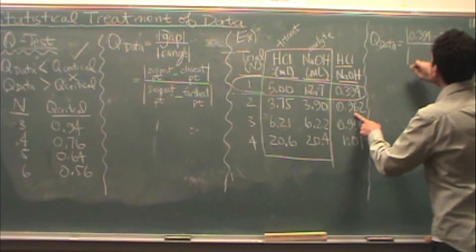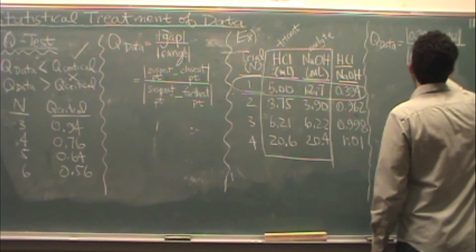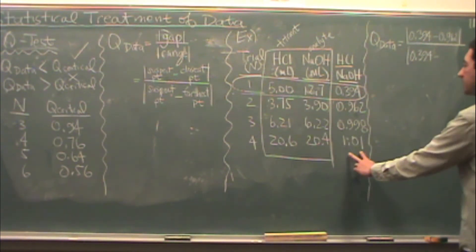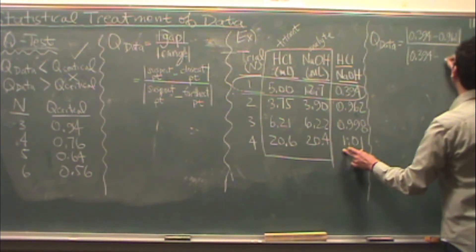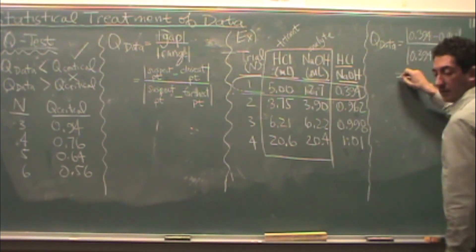Take the absolute value of that. In the denominator I'm going to take the range which is again the suspect point, 0.394, subtracted by the point that is numerically furthest from it. And that's the 1.01 is furthest away.